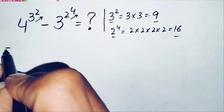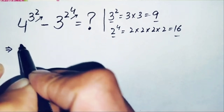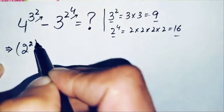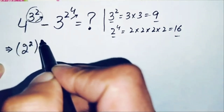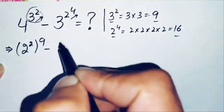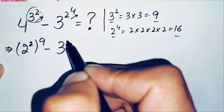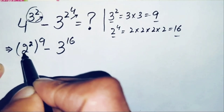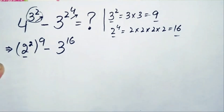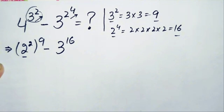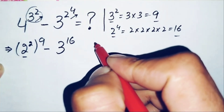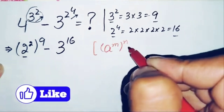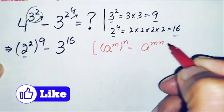So this problem becomes: 4, which we can write as 2 raised to power 2, or 2 squared, held to the power of 9, minus 3 raised to power 16. In this term we will use the exponentiation property (r^m)^n, and we can write r raised to power m held to power n as r raised to power m times n.